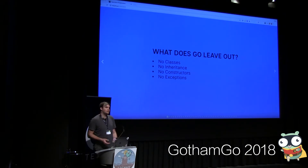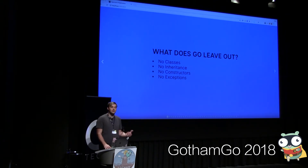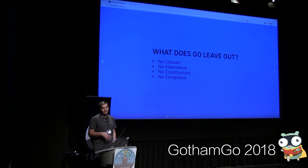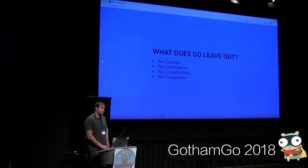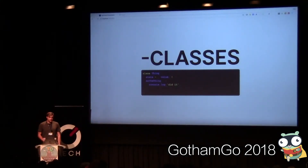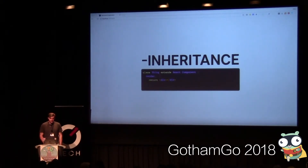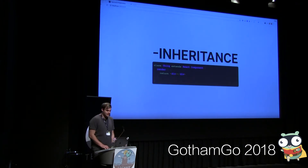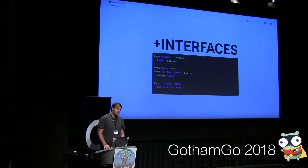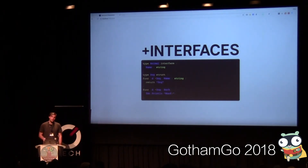If we're going to think about Go as a less featureful but faster JavaScript, we need to talk about what Go leaves out relative to JavaScript. It leaves out classes, inheritance, constructors, and exceptions — things that JavaScript programmers are pretty used to using. You'll see things like ES6 classes, static or non-static class properties, and shortened function notation in JavaScript. But Go doesn't have classes, so that goes out the window. And since Go doesn't have classes, it also doesn't have inheritance. But it does have interfaces, and interfaces get you a really long way without classes or inheritance.